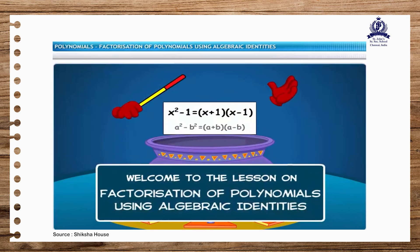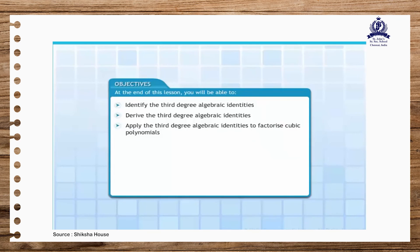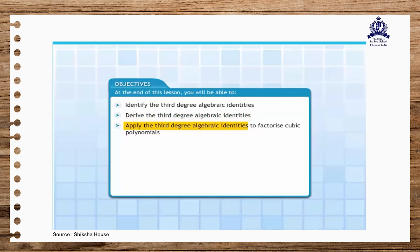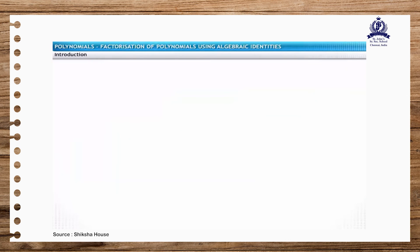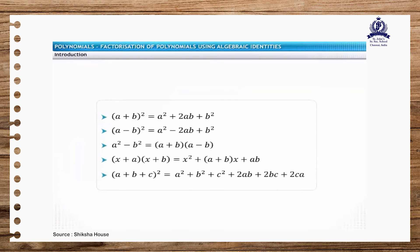Welcome to the lesson on factorization of polynomials using algebraic identities. At the end of this lesson, you will be able to identify and derive the third degree algebraic identities and apply these algebraic identities to factorize cubic polynomials. You must be familiar with the algebraic identities of second degree listed here. These identities can be used to factorize quadratic polynomials.